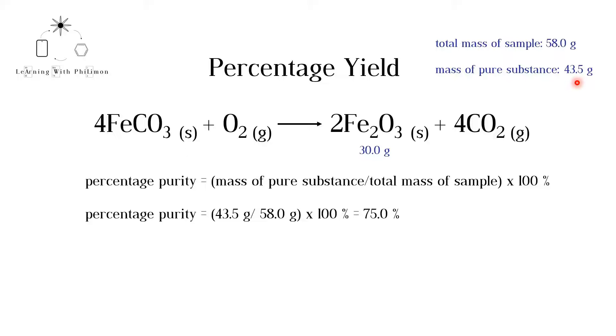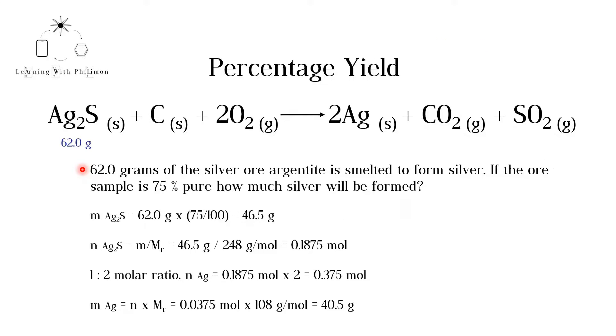Now, let's see another type of question you might encounter. In this reaction, 62.0 grams of the silver ore argentite, Ag2S, is smelted to form silver, Ag. If the ore sample is 75% pure, how much silver will be formed?